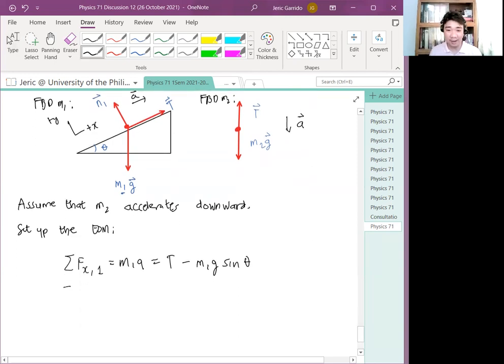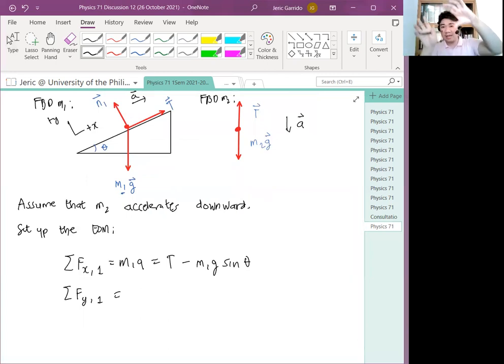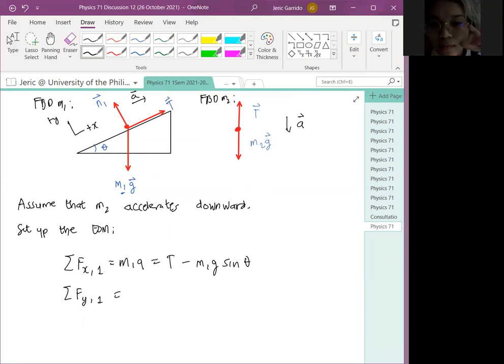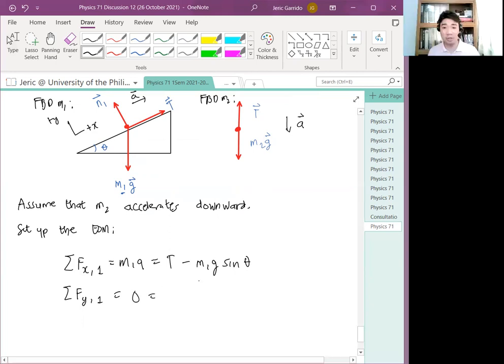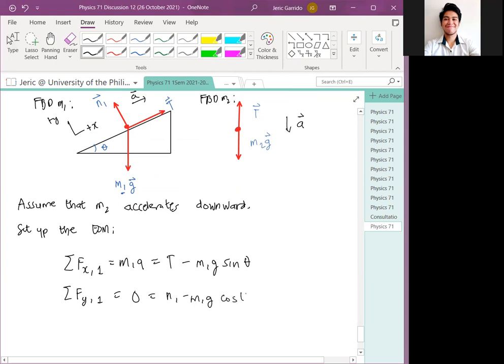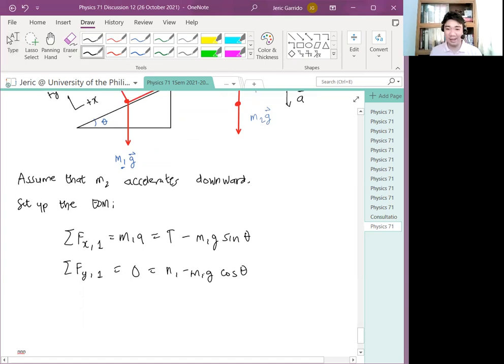For the y direction, for the first mass, you don't want the box to move up and down on the incline, right? Therefore, what should be the net sum of all forces in the perpendicular direction? Zero. Yes, exactly. This should be zero. Which is equal to N1 minus M1G cosine theta. Apparently, you don't need this one.